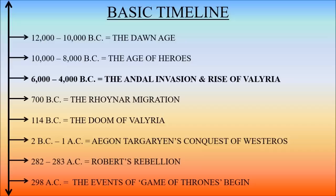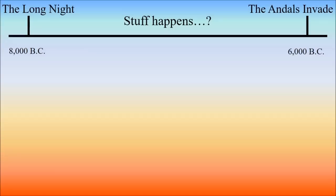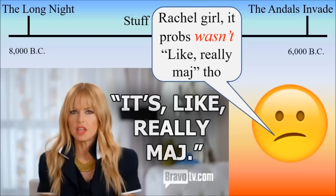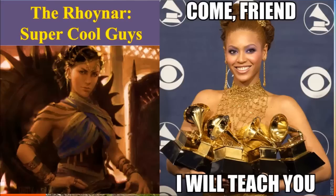The next period of major human activity comes with the Andal invasion of Westeros, about 6,000 years before Aegon's conquest. The Long Night was about 8,000 years before Aegon's conquest, so not much important happens for about 2,000 years between these events. The Andals actually originated in a region known as the Axe in Essos. They were a nomadic people and had learned to forge iron from the Rhoynar — yet another group of people living in Essos. We'll come back to the Rhoynar in a little bit.